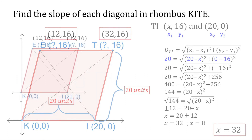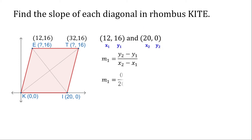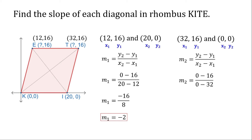Now that we have x equals 32, we can compute the slope of each diagonal. For diagonal EI, assigning points and using the slope formula: 0 minus 16 over 20 minus 12, that gives us negative 16 over 8, or negative 2. For diagonal TK, using points 32, 16 and 0, 0: 0 minus 16 over 0 minus 32 equals negative 16 over negative 32, which is one half.